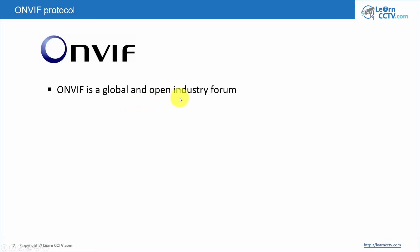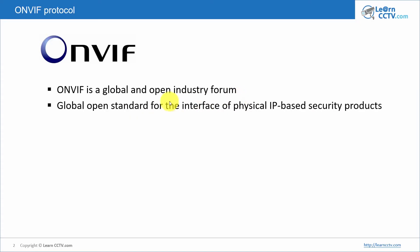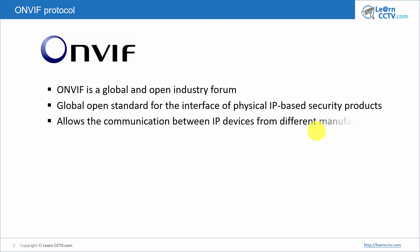ONVIF is a global and open industry forum, meaning you have members that participate in this forum. It's a global open standard for the interface of physical IP-based security products — meaning cameras, NVRs, DVRs, and access control systems — and it allows the communication between those IP devices.